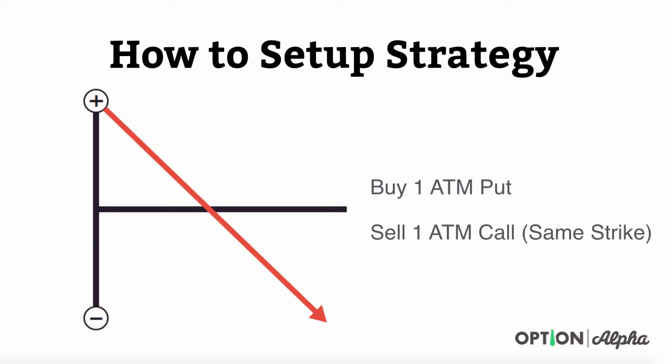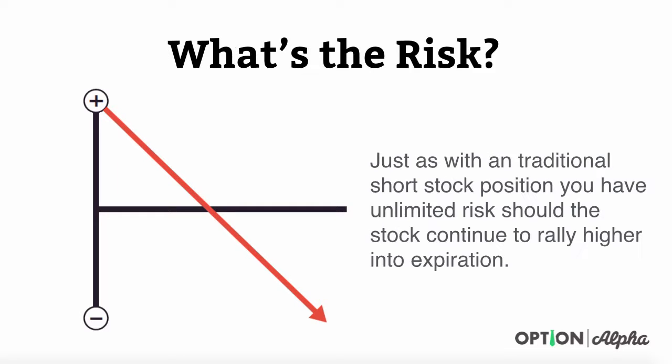How do we actually set up this strategy? It's actually pretty easy. Basically, what we're going to do is buy an at-the-money put option, which is as close to where the stock is trading right now as possible. At the same time, right across the option chain, we're going to go ahead and sell an at-the-money call option at the same strike. This will ideally get us synthetically short the stock at that strike price.